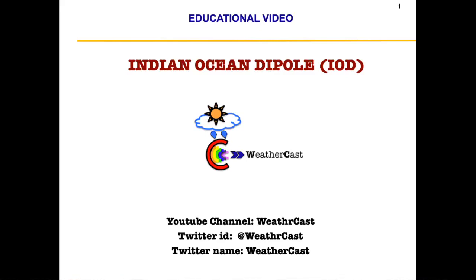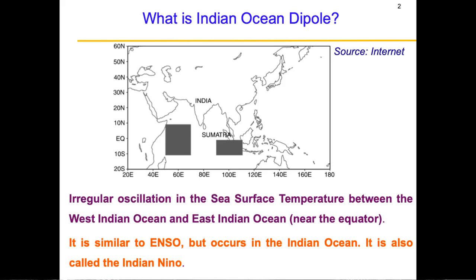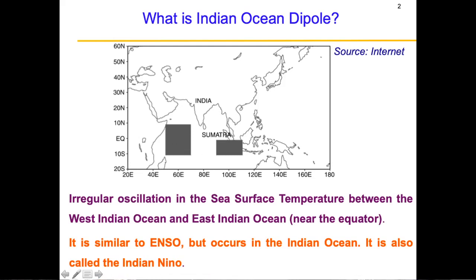Hello friends, welcome to Weathercast. Today's educational video is on the Indian Ocean Dipole. It is the oscillation in the sea surface temperature between the West Indian Ocean and the East Indian Ocean, very close to the equator. If there is a warm pool of water near Somalia and a cold pool near Sumatra, that leads to a convective pattern in the atmosphere. This irregular oscillation impacts convective strength in the Indian Ocean, and it is very similar to ENSO or the El Niño Southern Oscillation — but as an Indian Ocean phenomenon.